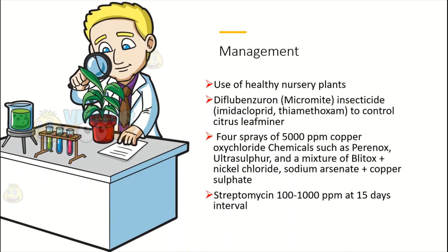For control, we must use healthy nursery plants. We can control the citrus leaf miner through different chemicals, because the citrus leaf miner acts as a vector in spreading this disease. Chemicals used include diflubenzuron for mites, as well as imidacloprid and thiamethoxam.